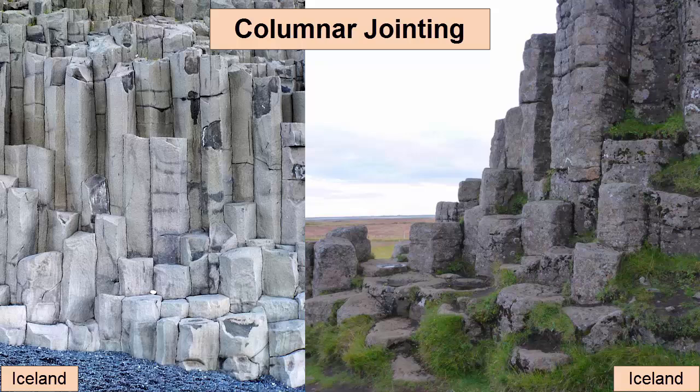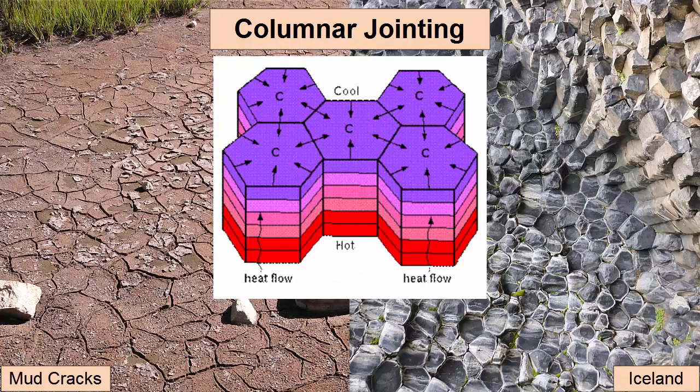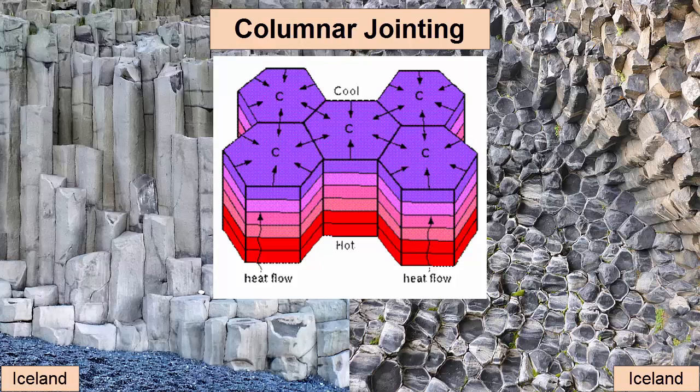Some lava flows display a cooling feature known as columnar jointing, which results when lava flows are cooled a bit slower than normal from their surface and their base simultaneously. While cooling, the lava shrinks, forming cracks that propagate much the same way as mud cracks form. The shrinking cracks produce geometrically shaped, often hexagonal, columns. Columnar jointing occurs mostly in primitive lavas that cool very close to the surface but are insulated somehow by their surroundings, so they cool a little more slowly than normal. These cooling cracks can also form within welded ash deposits that collect within a valley.